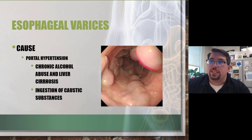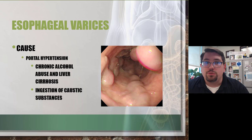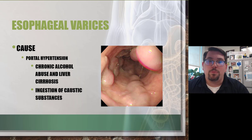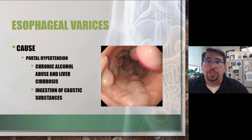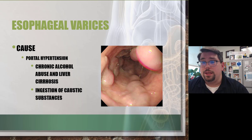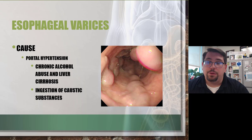Esophageal varices are swollen veins of the esophagus that can rupture and hemorrhage — with a mortality rate over 35%. One example: a woman who had just bought a new pickup truck began coughing and vomiting excessive amounts of bright red blood. She was a chronic alcohol user and died in her truck from massive blood loss. By the time the ambulance arrived — only about three minutes away — she was already in cardiac arrest and could not be resuscitated.